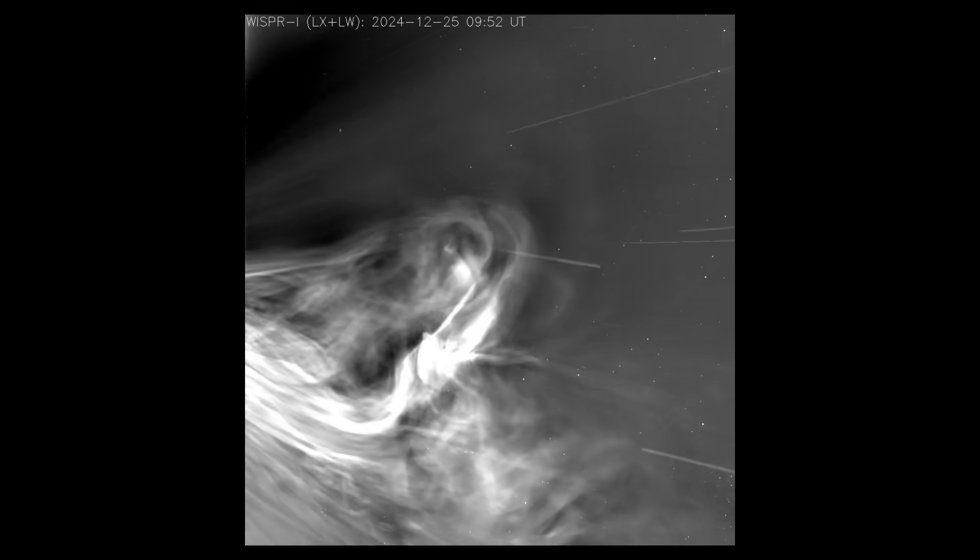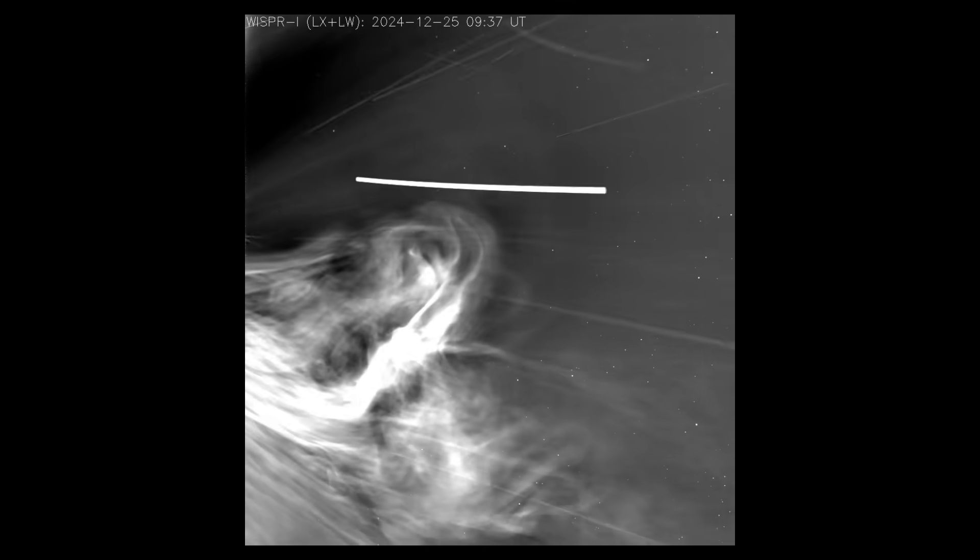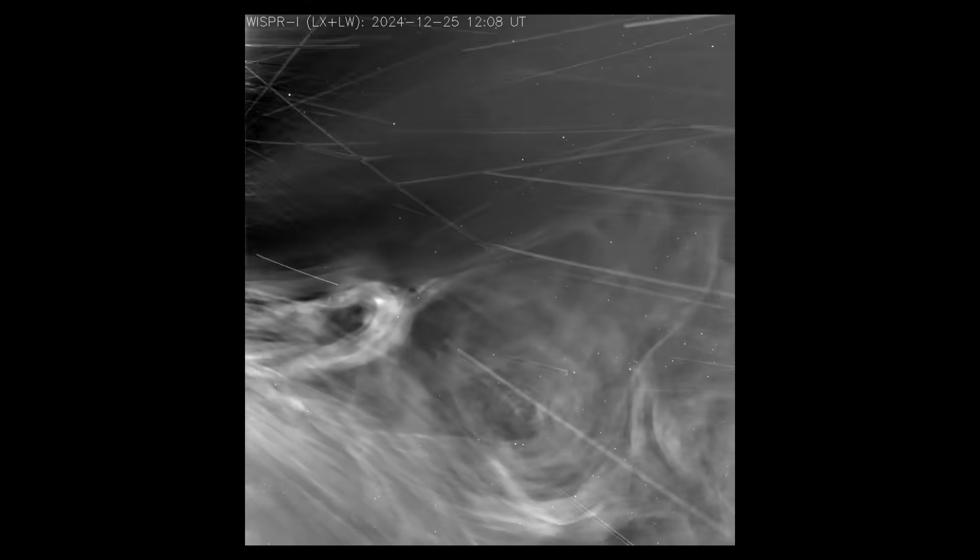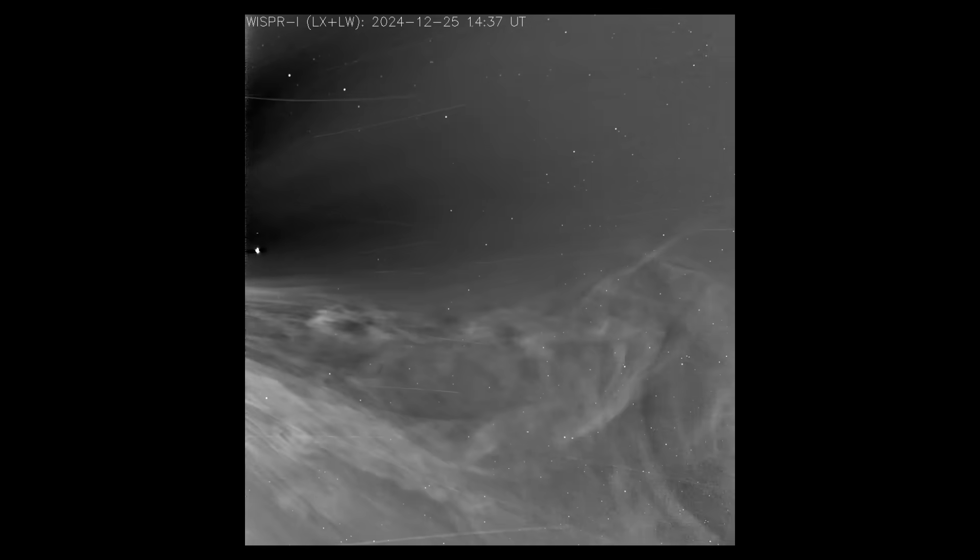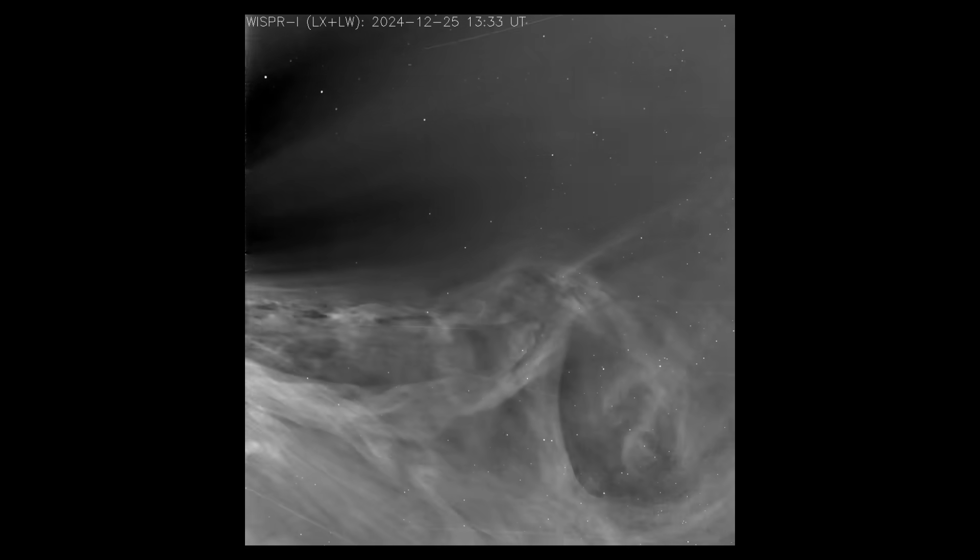And now, we finally get to see what Parker saw. For the first time, we have direct images of the solar wind and coronal mass ejections captured from right where they begin, the outer atmosphere of the Sun.